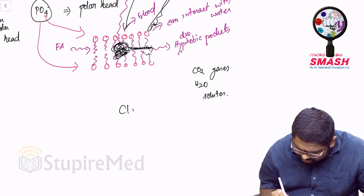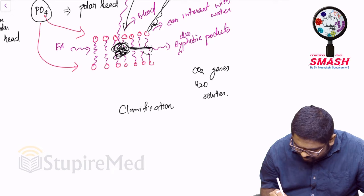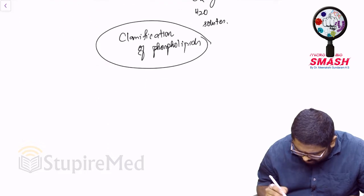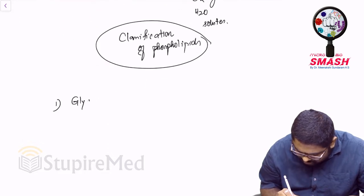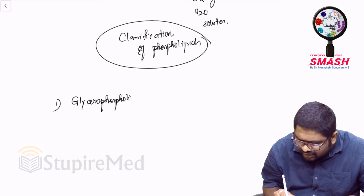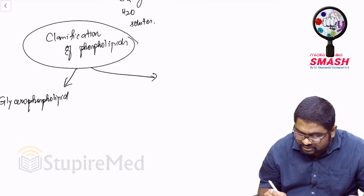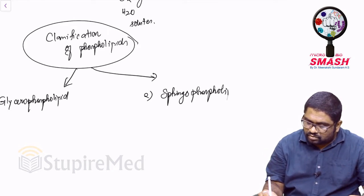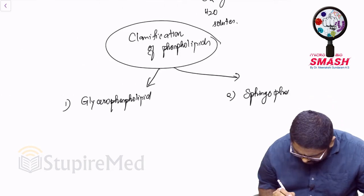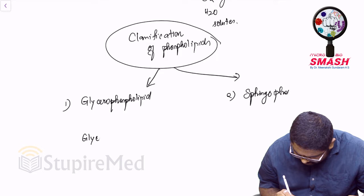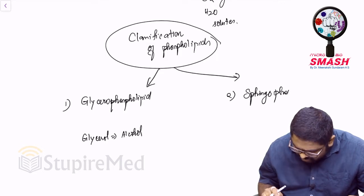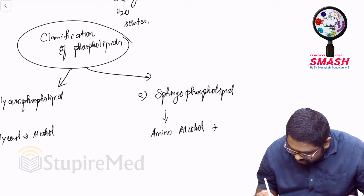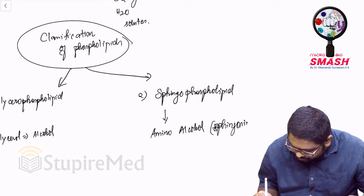What are the classifications for phospholipids? We have glycerophospholipid and the other would be sphingophospholipid. Glycerophospholipids have glycerol moiety present as the alcohol. In case of sphingophospholipid, amino alcohol called sphingosine is present in them.